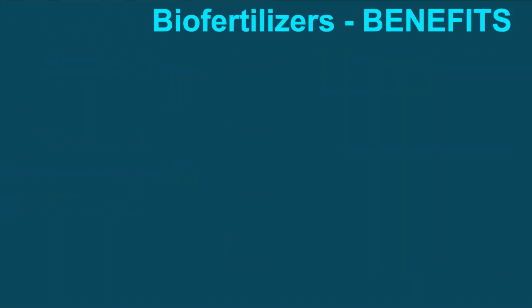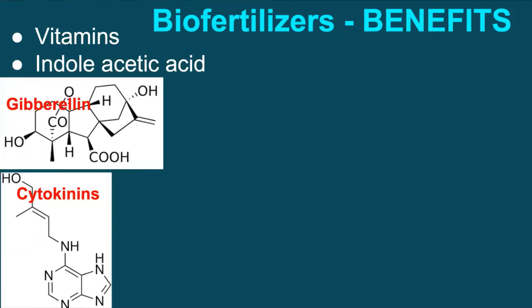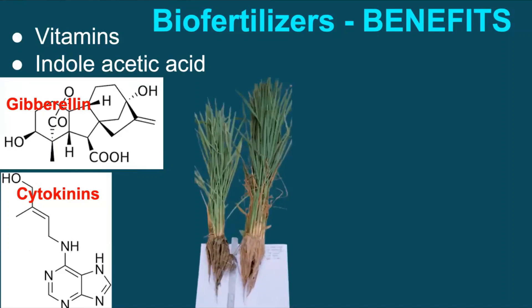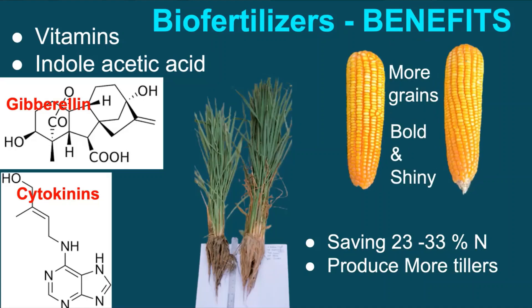Apart from yield increase, biofertilizer application has direct effects: they produce vitamins and growth hormones which increase seed germination, number of lateral roots, and root growth. This results in higher intake of nutrients, i.e., better fertilizer use efficiency and better growth of produce. It can save up to 33% of nitrogen in the very first season, while continuous application can bring down nitrogen use by up to 50%. It produces more tillers, more grains per ear or panicle, and grains are bold and shiny. It increases the organic carbon content of the soil and ultimately increases farmers' income manifold.